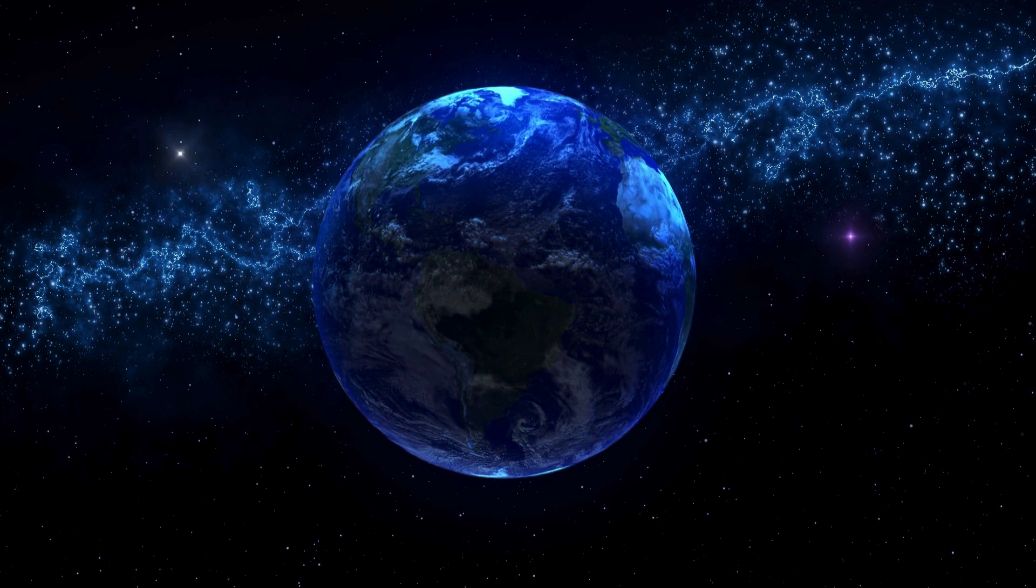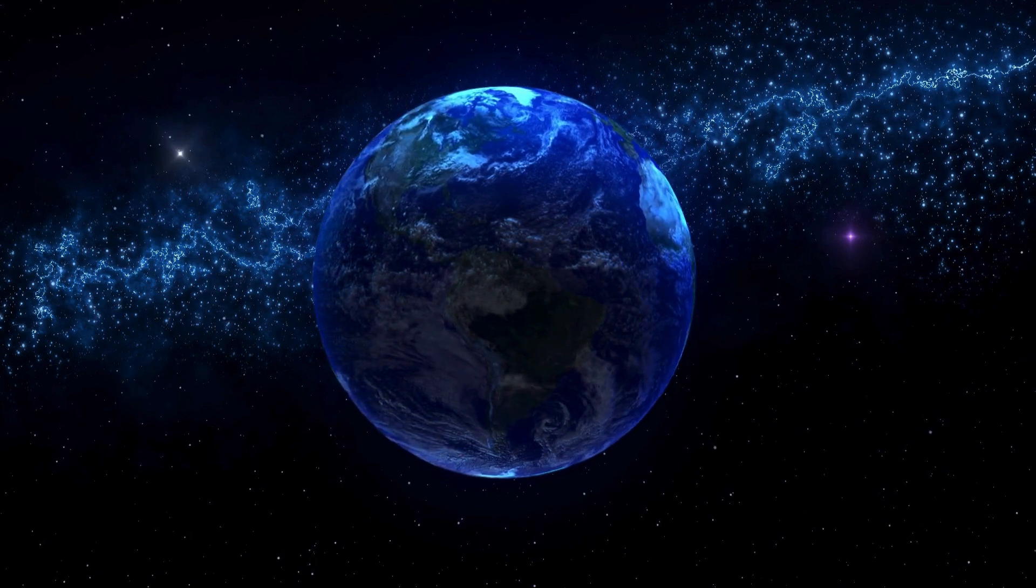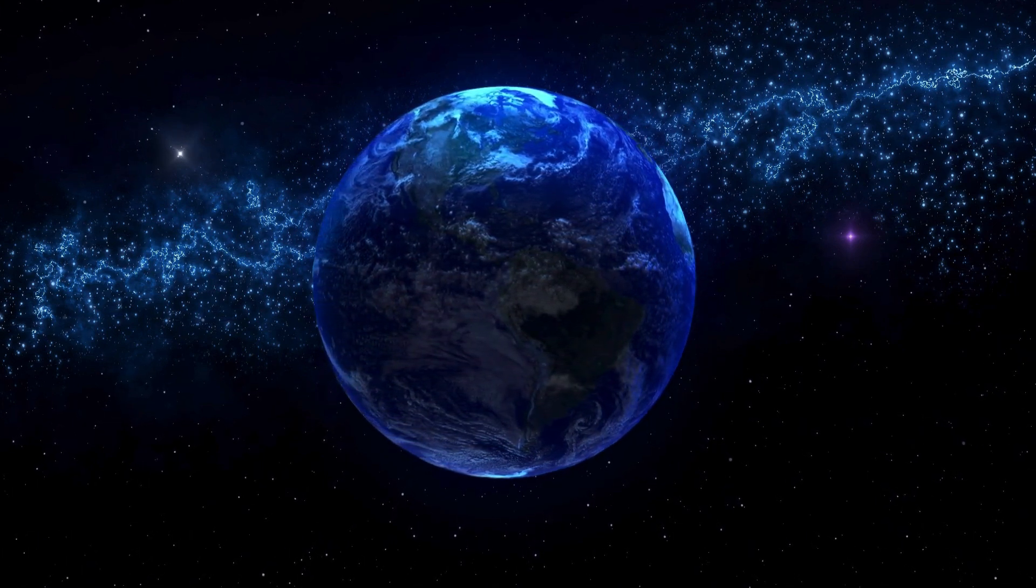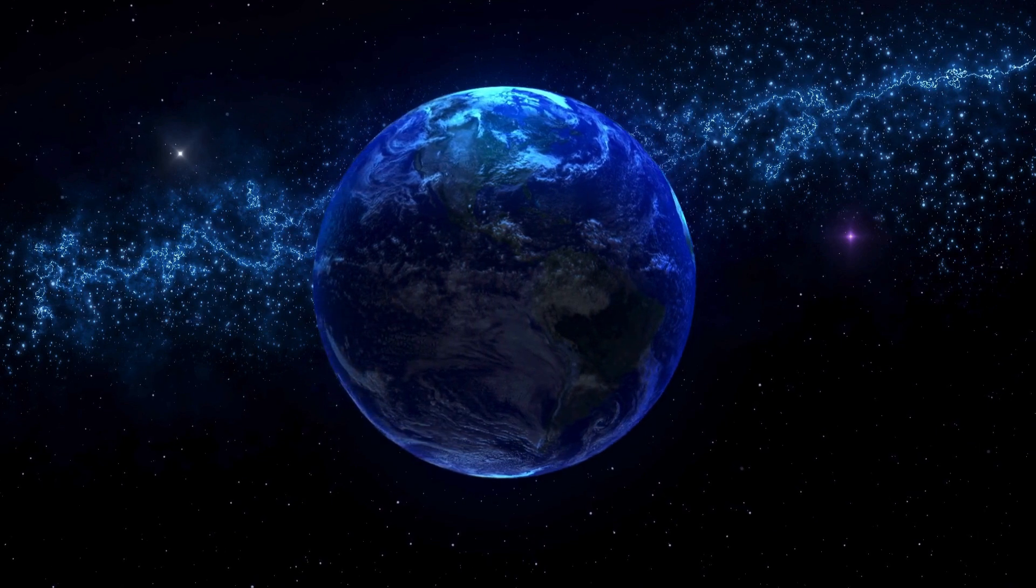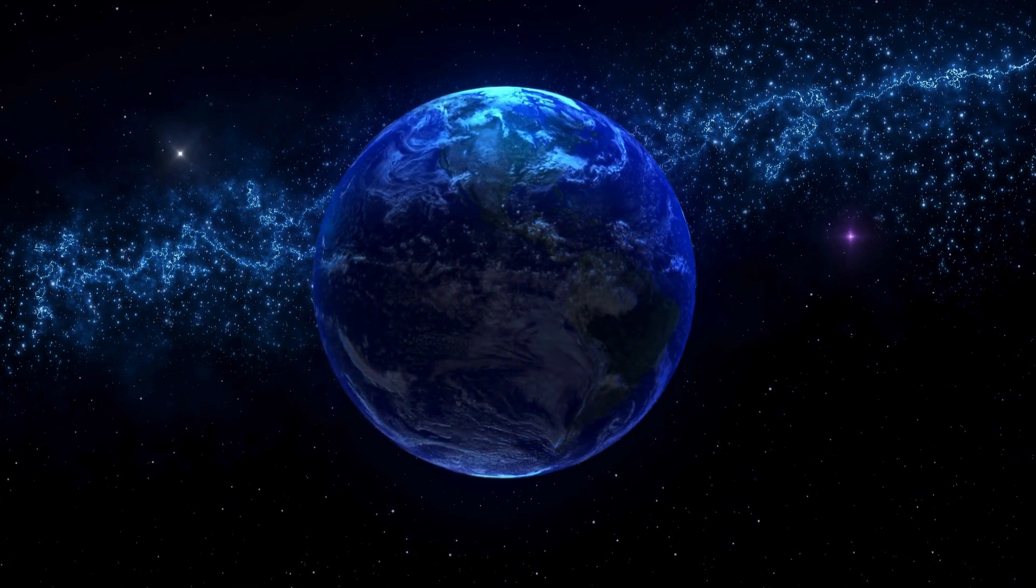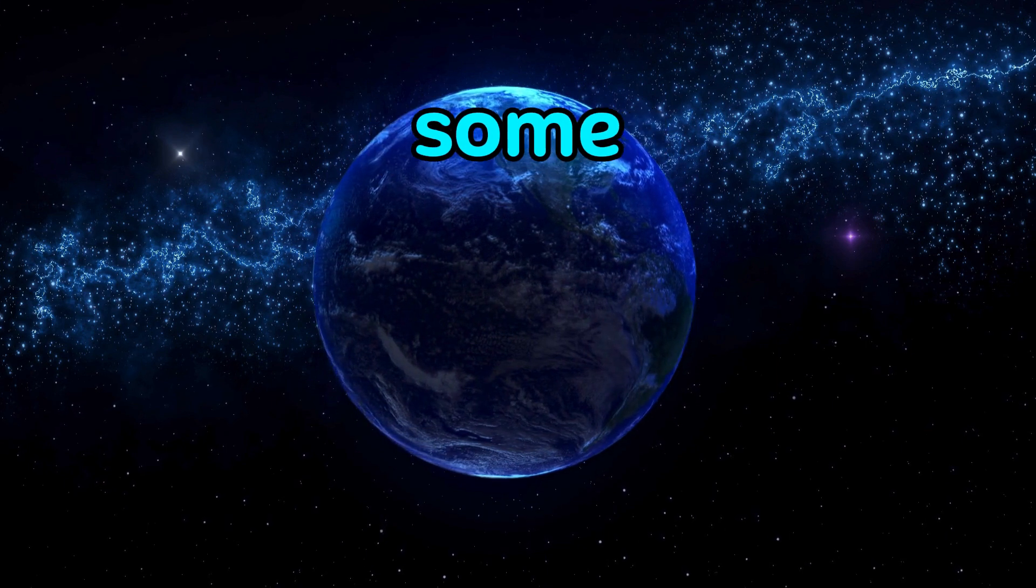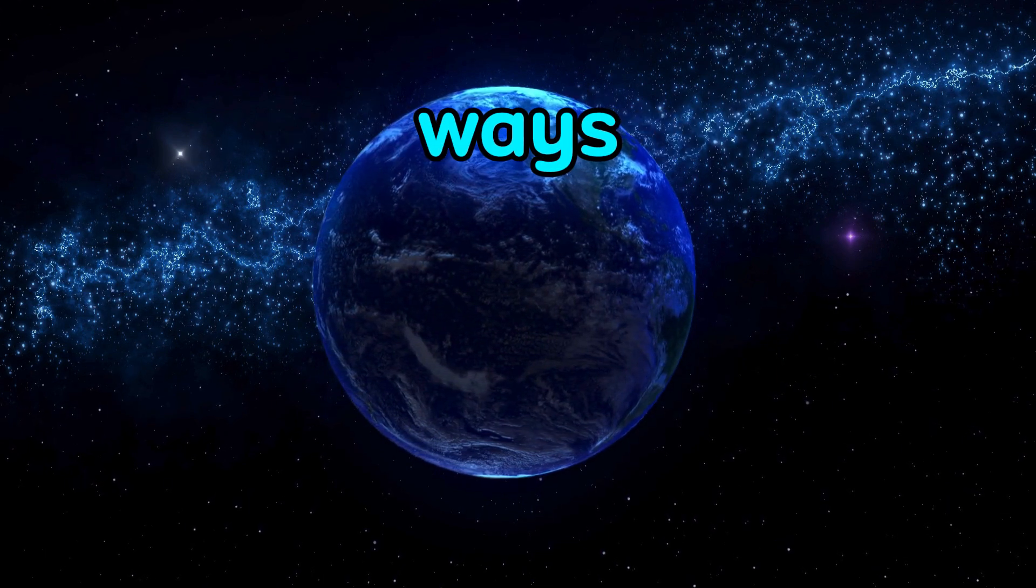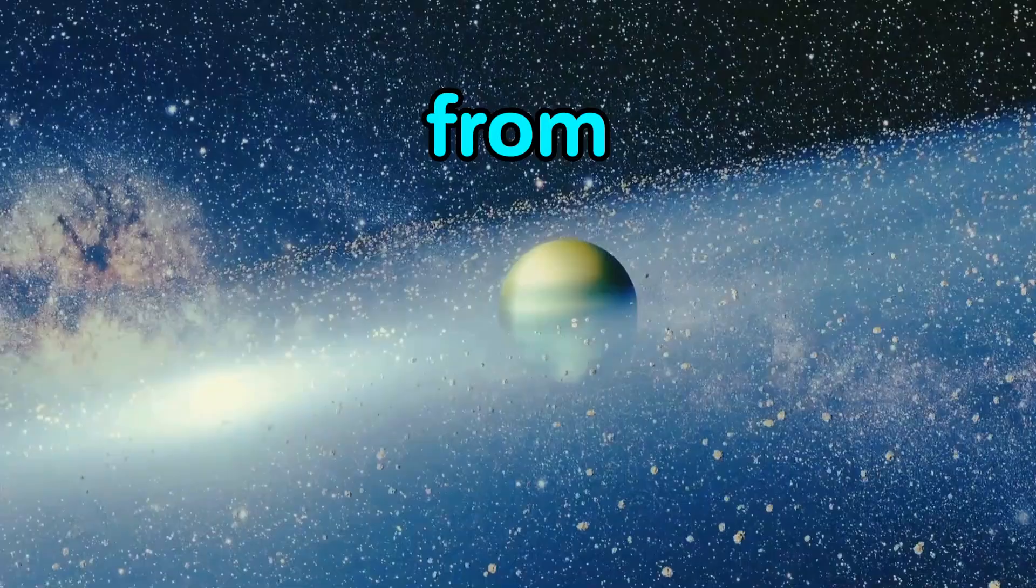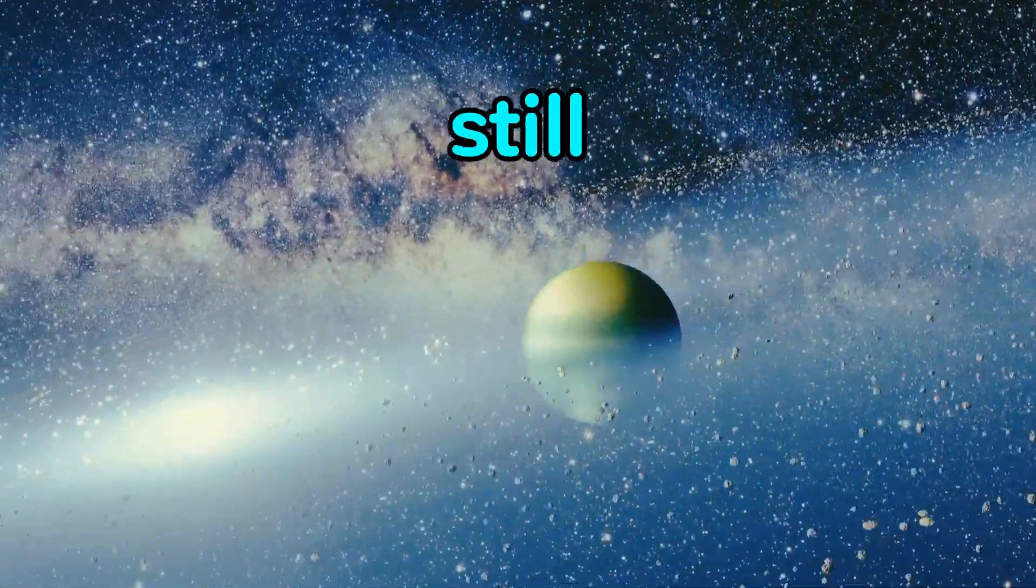Do you ever feel like gravity is bringing you down? If so, you do your best to avoid GJ-436b. GJ-436b is an exoplanet in the constellation Leo that appears to break the laws of physics in some fundamental and mind-bending ways. It exists about 30 light-years from Earth and is chillingly cold but still hot.